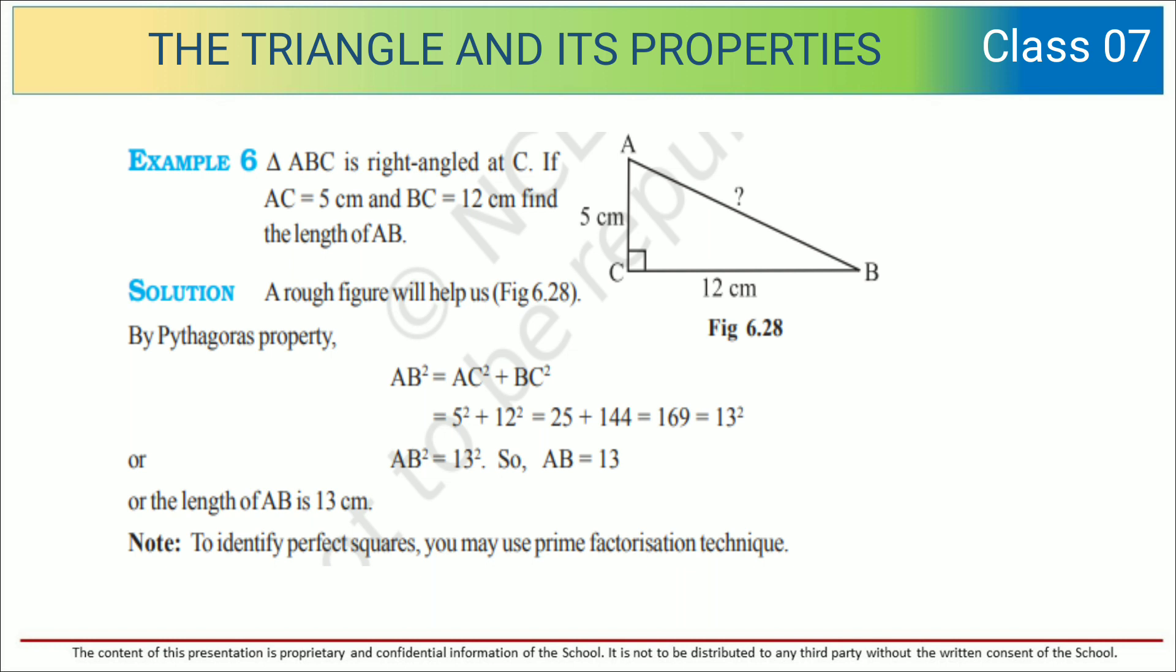Over here, AB is the hypotenuse. By Pythagoras property, we can find the answer. AB² equals AC² plus BC².